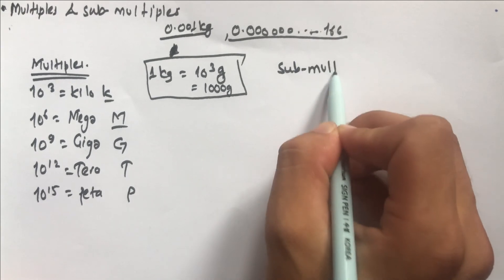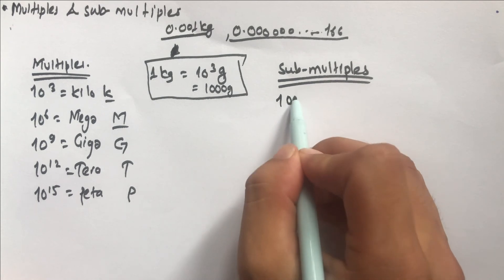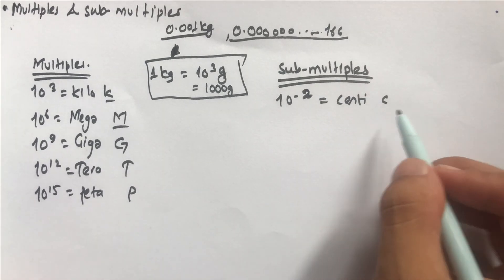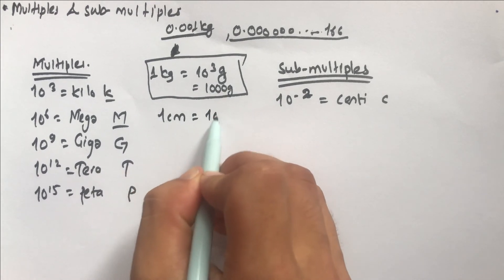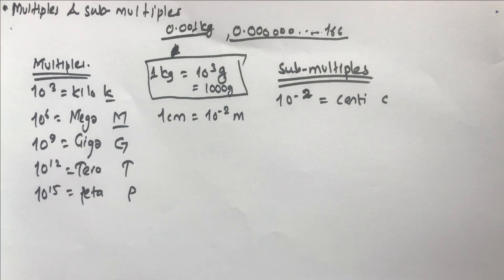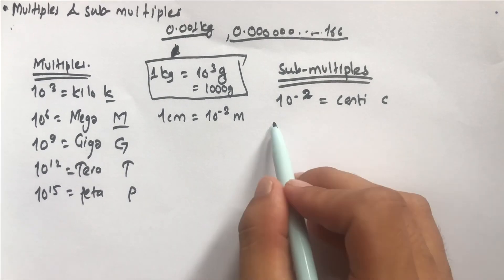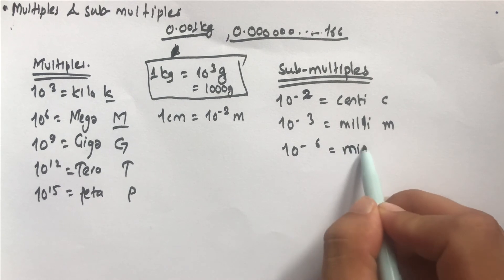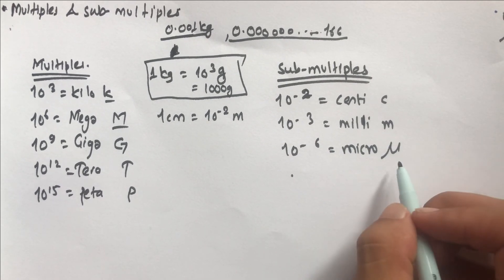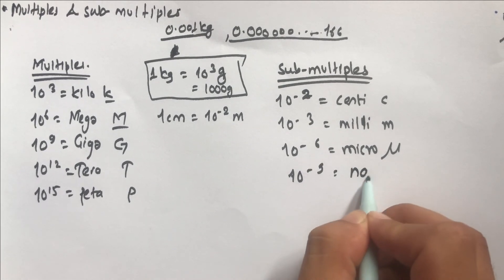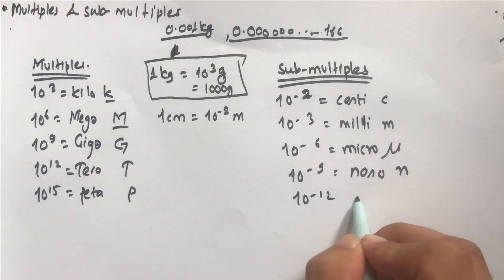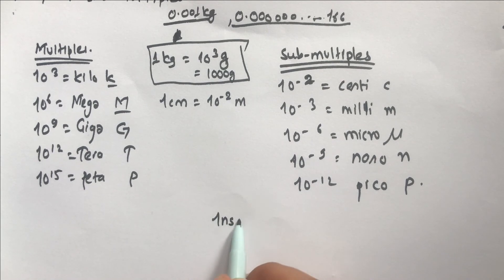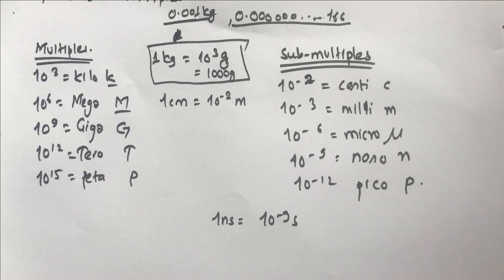For sub-multiples: 10⁻² is centi (c) — one centimeter is 10⁻² meter. 10⁻³ is milli (m) — one millimeter is 10⁻³ meter. 10⁻⁶ is micro (μ, pronounced 'mu'). 10⁻⁹ is nano (n). 10⁻¹² is pico (p). So when someone says one nanosecond, they mean 10⁻⁹ seconds — a very small fraction of time.